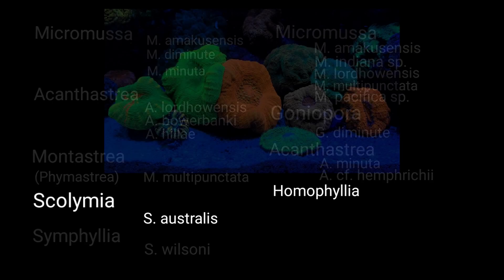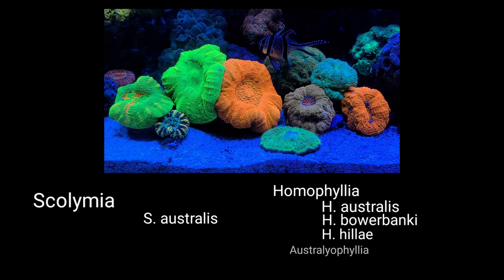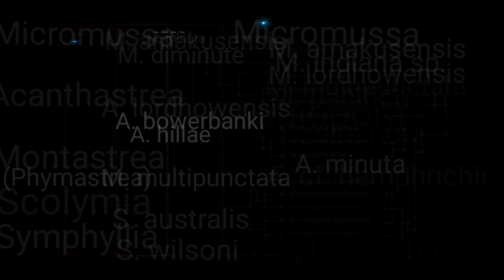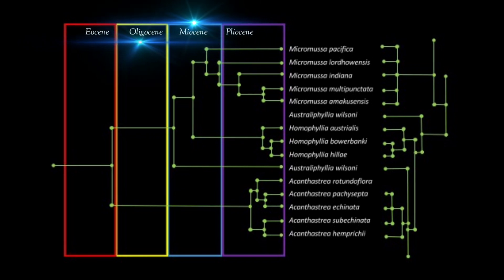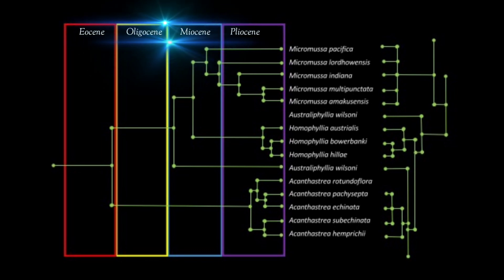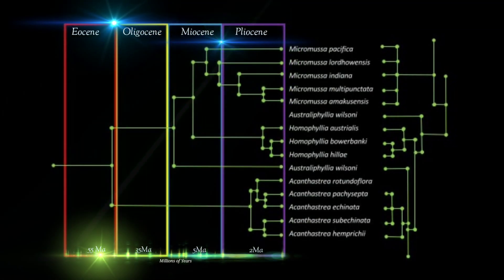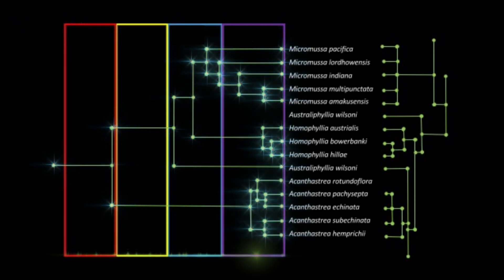But this brings us back to the Scolymia coral. It is now actually a Homophyllia and is now most closely related to the Bauerbanki. Macroscopic and microscopic morphological analysis alone is not enough to detect low levels of homoplasia within Lobophylliidae. However, with the addition of molecular analysis, we are able to do so. We are also able to determine the relative time at which different families of coral have undergone divergent evolution.